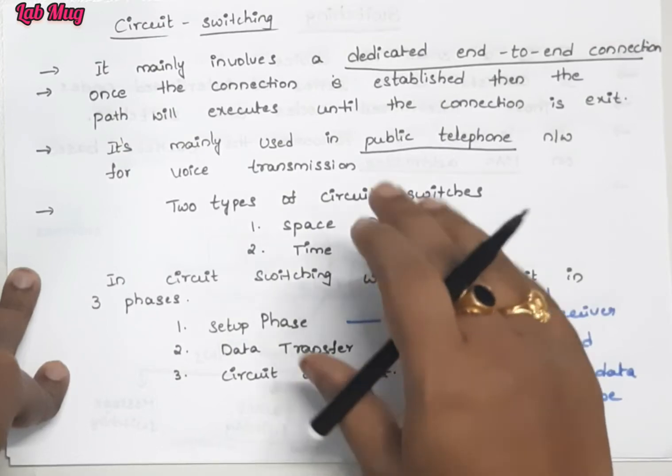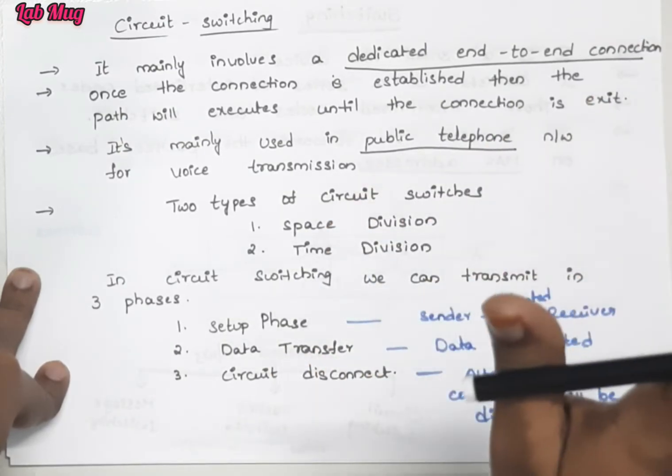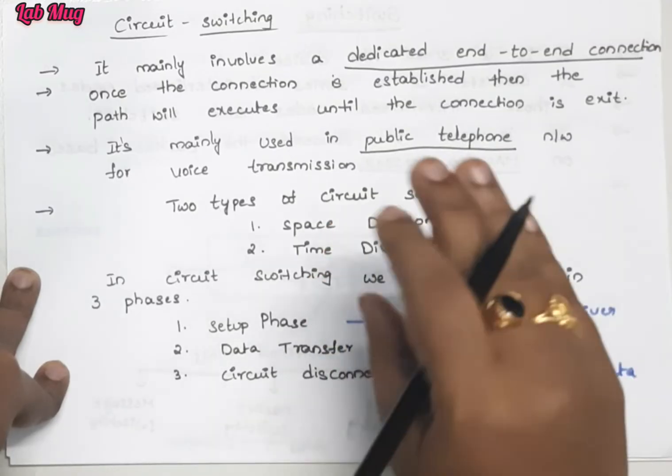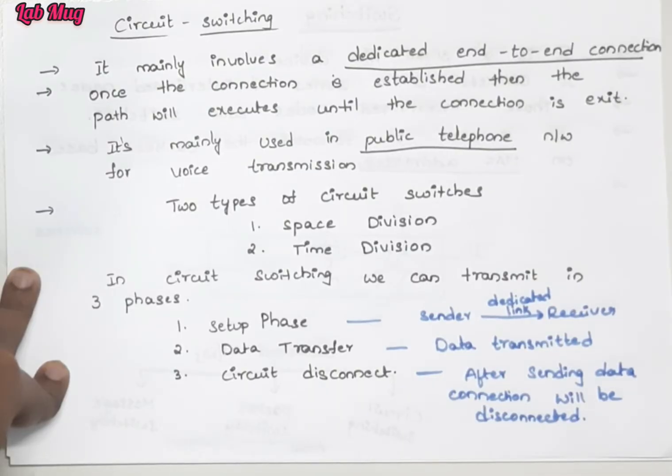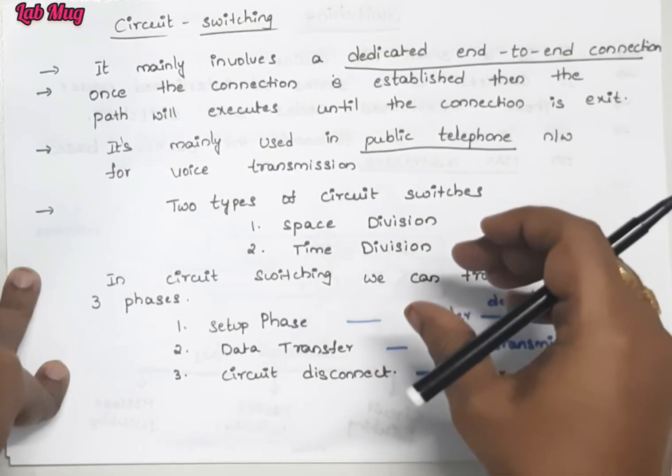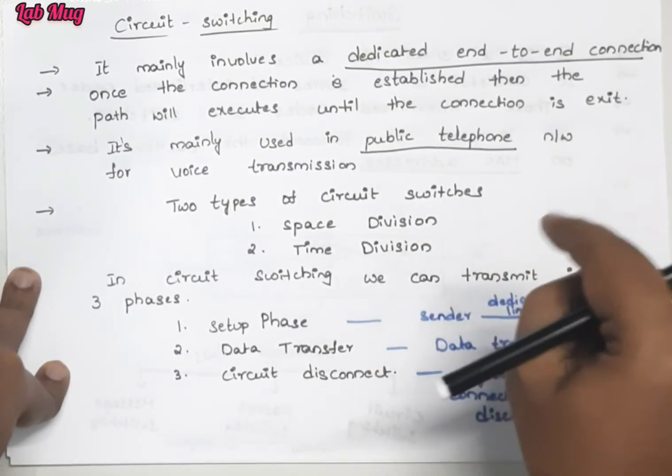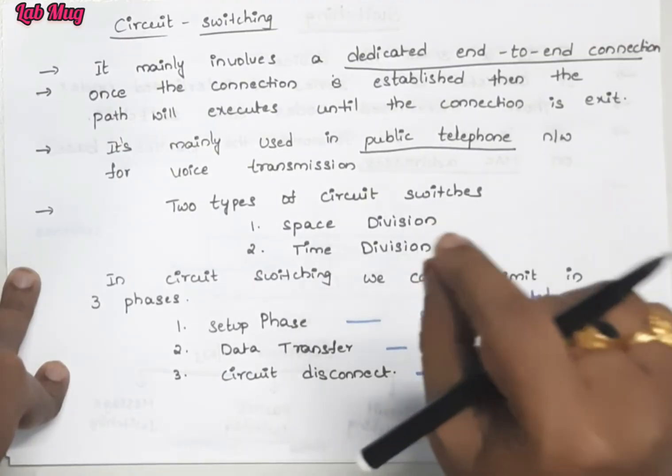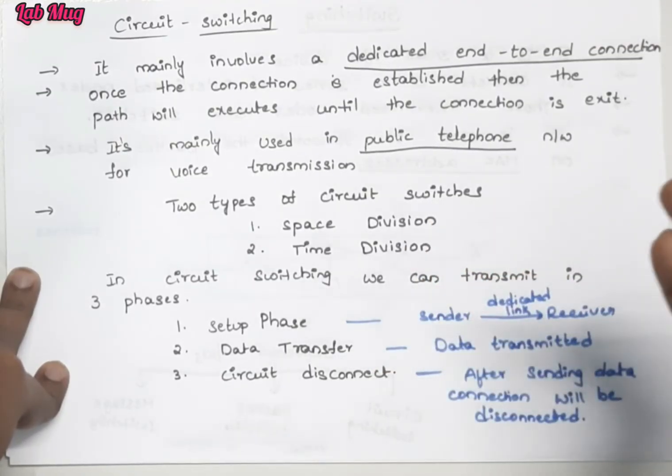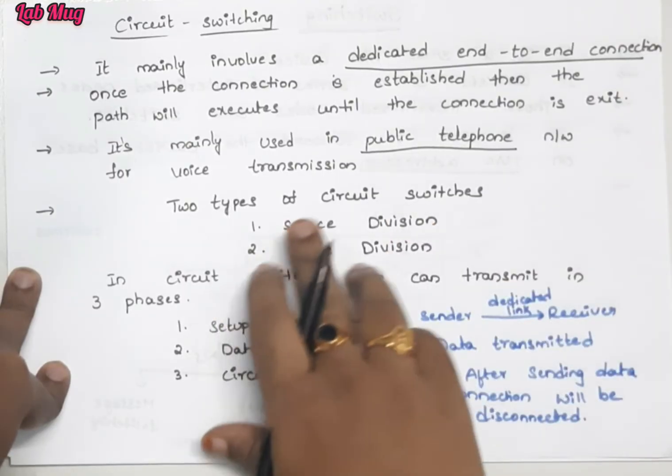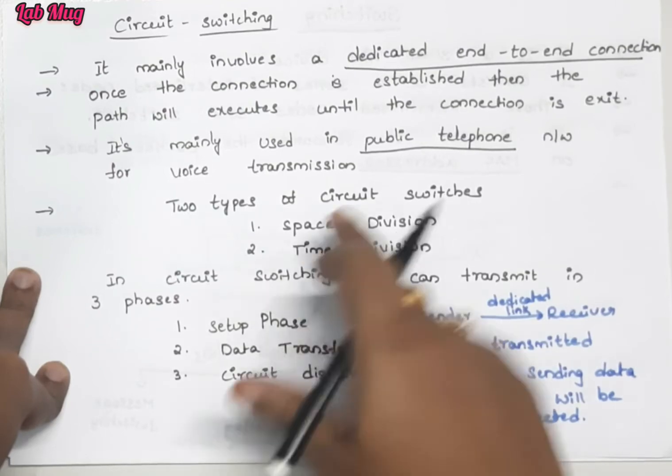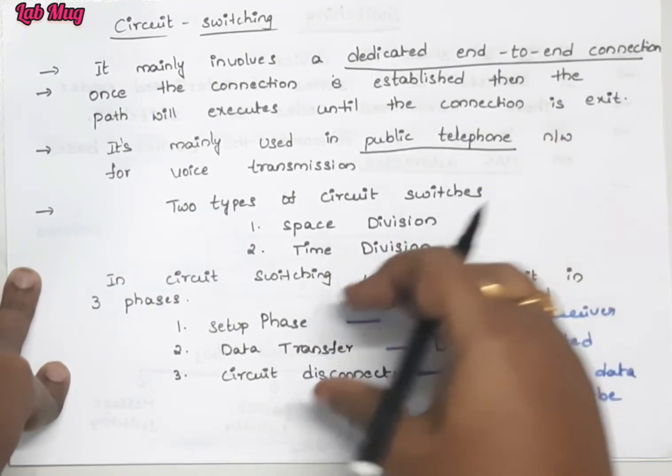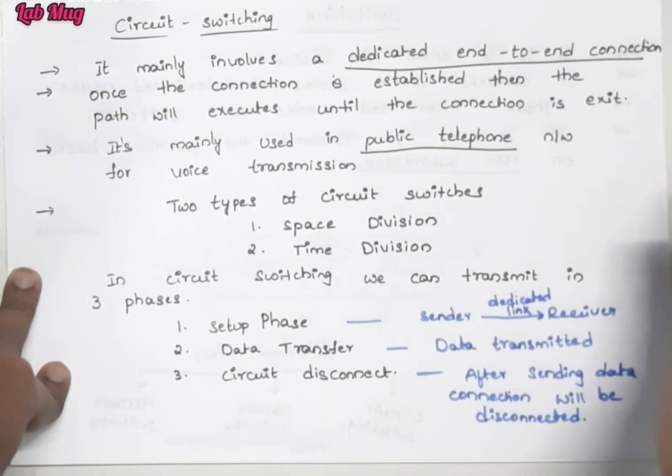This is very important. If you get a question like 'What is switching, explain the techniques of switching', you should write about the switching concept and then the three switching techniques: circuit, packet, and message. You must write about all three. You should write in detail about what circuit switching is, and explain the two types in circuit switching: space division and time division, with diagrams in detail.